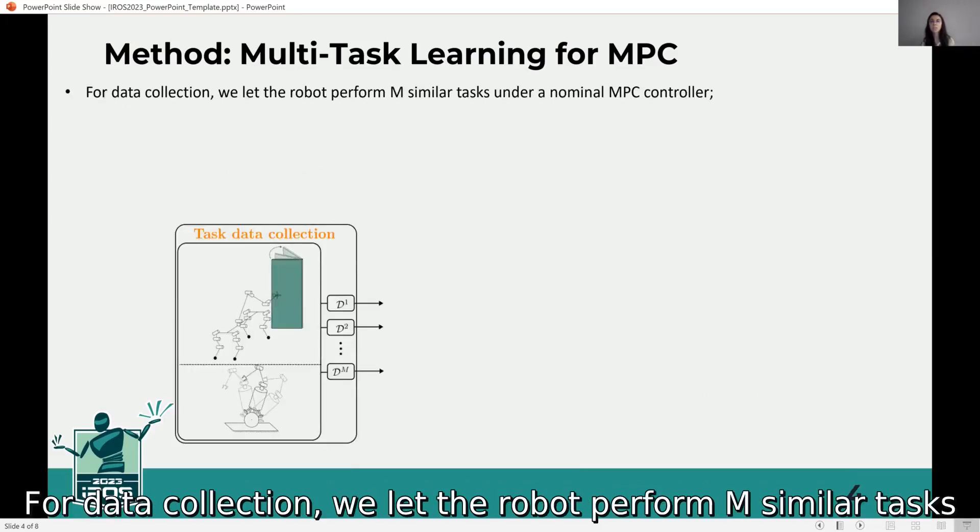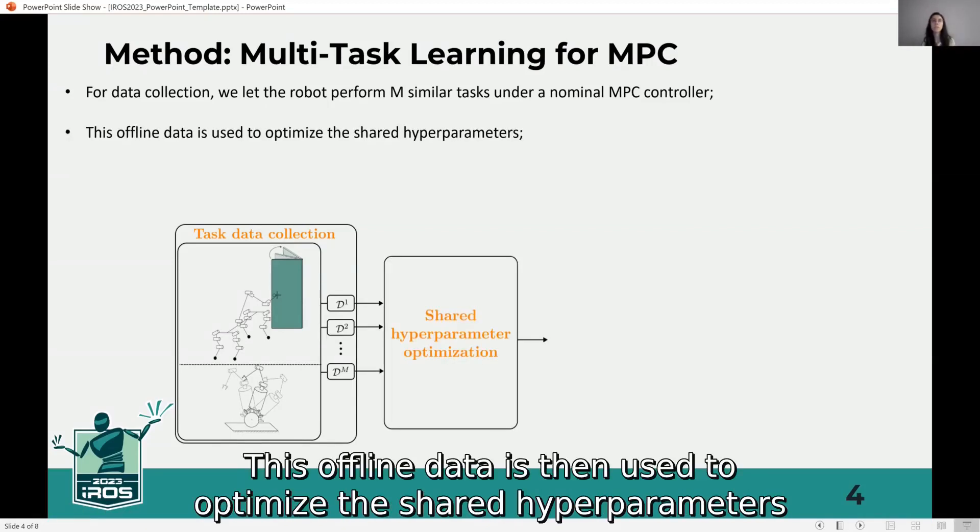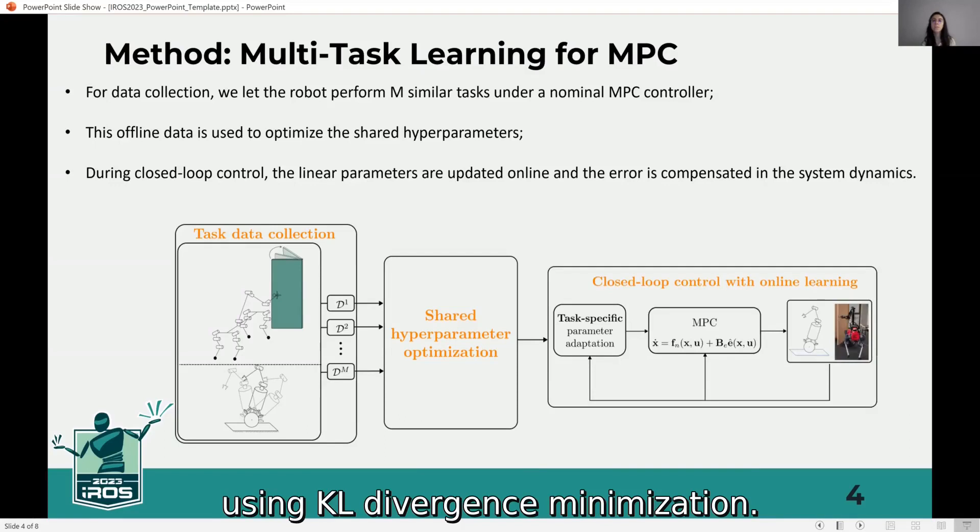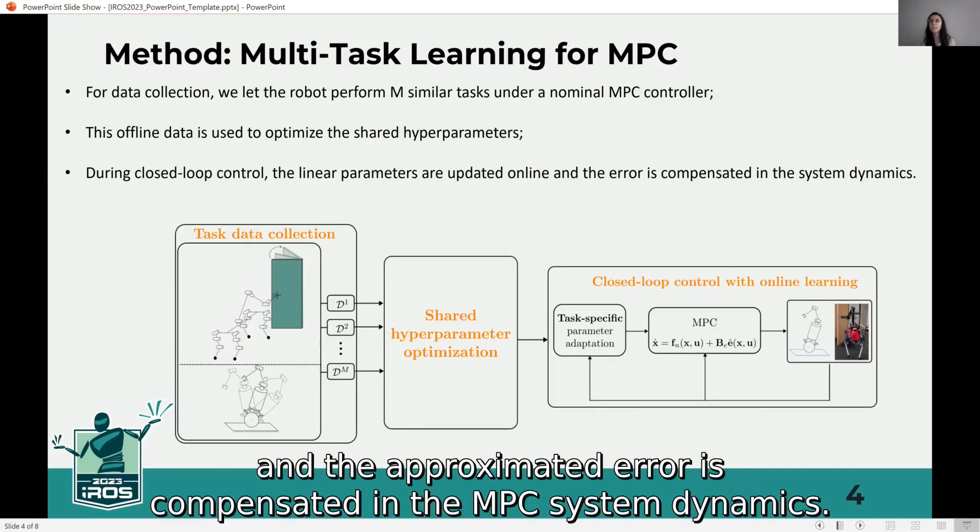For data collection, we let the robot perform n similar tasks under a nominal MPC controller. This offline data is then used to optimize the shared hyperparameters using KL divergence minimization. During closed-loop control, the linear parameters are updated online via Kalman filtering and the approximated error is compensated in the MPC system dynamics.